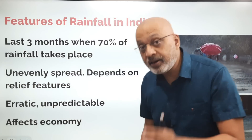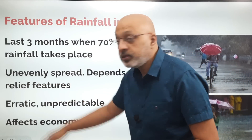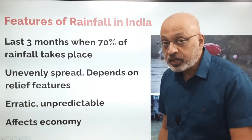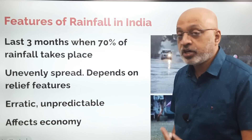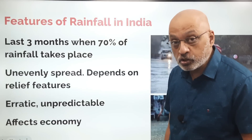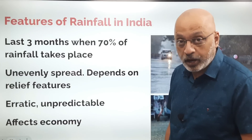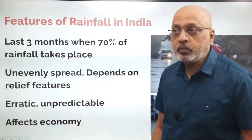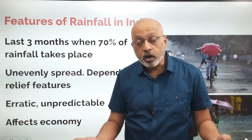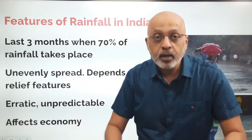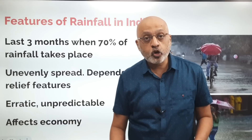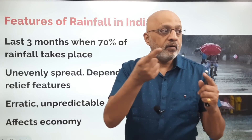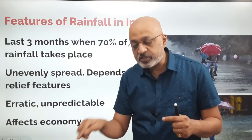The rainfall is erratic and unpredictable. The Indian Meteorological Department predicts the monsoon, but sometimes it does not fall exactly according to prediction. This affects the economy because India is essentially an agrarian economy — the farmer depends a lot on the monsoon for his crops. If it rains, the harvest happens; only then will he buy fertilizers, tractors, and seeds.